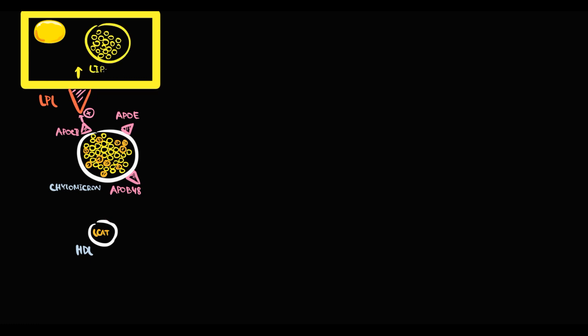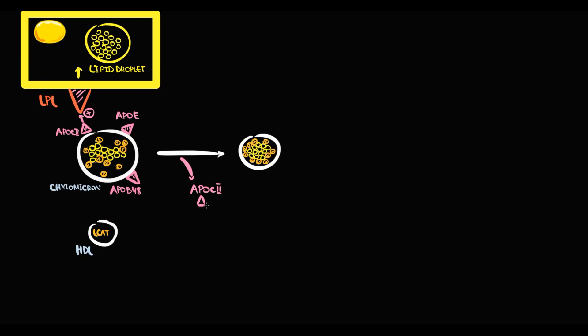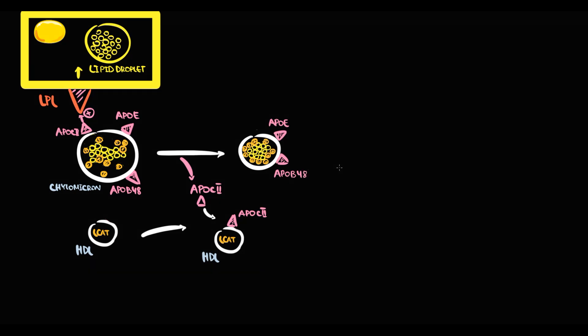Inside the adipose tissue, triacylglycerols are stored in lipid droplets. When enough triacylglycerols have been delivered to the adipocyte, the chylomicron detaches, and with detachment it gives ApoC2 back to HDL, since this apoprotein is no longer needed. With the loss of such a large portion of triacylglycerols, the chylomicron becomes significantly smaller — it shrinks. This smaller particle with only two apoproteins on its surface we call the chylomicron remnant.